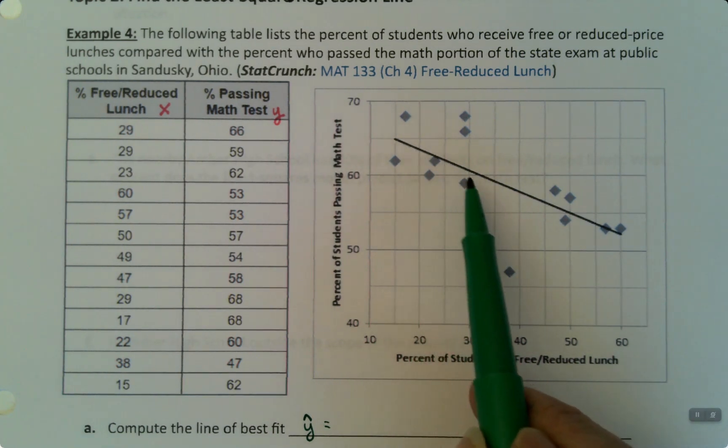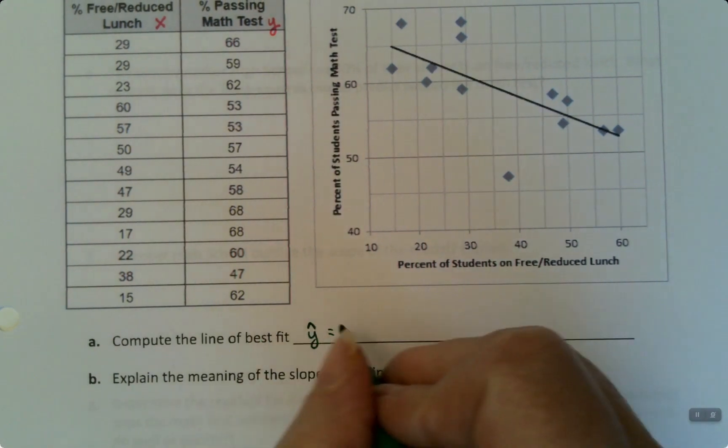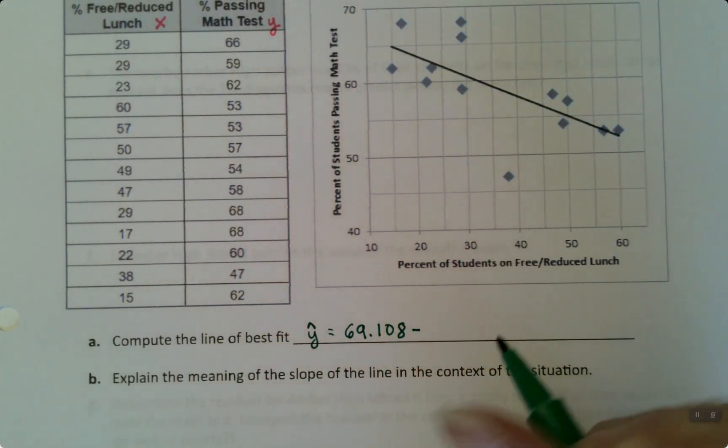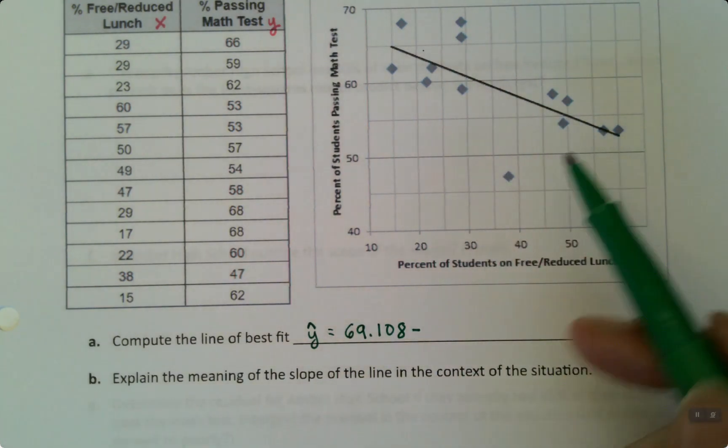So if you look at it, the dots, their Y values of the dots are the Y's. That's why we call the line a Y hat. Now your professor is probably not going to take any points off or anything, so I wouldn't worry about it too much.